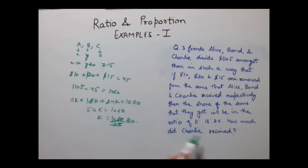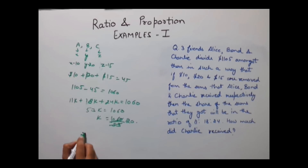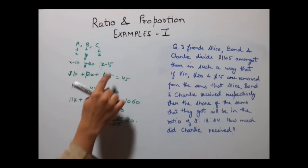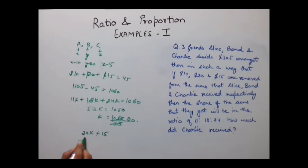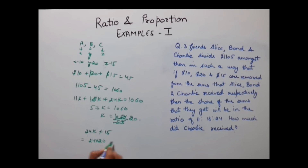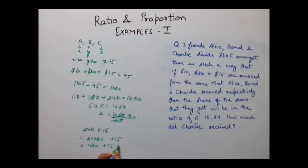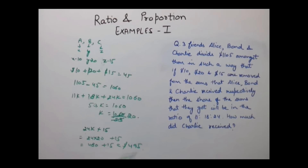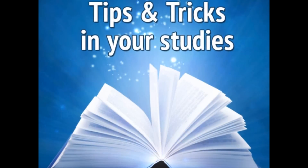Now we need to find Charlie's share. Charlie's amount is 24k plus the $15 that was subtracted. With k = 20, that is 24 × 20 + 15 = 480 + 15 = $495. So Charlie's share was $495. I hope you have understood these questions. For more tutorials, stay tuned with IndiaEDU.com. Thank you.